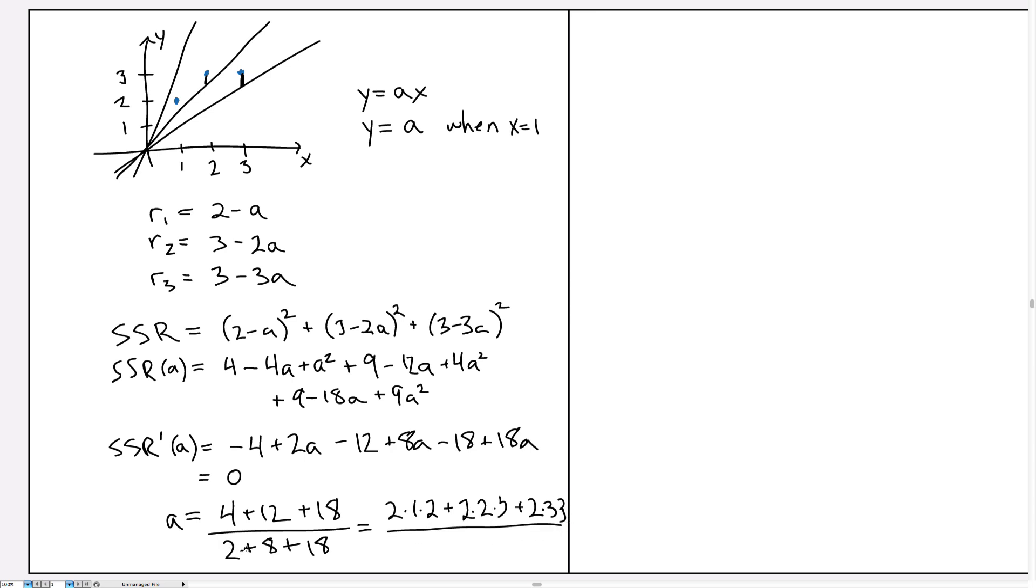What about in the denominator? This 2 came from the 2 in front of the A, which was from 1 squared, but then we brought down the 2. So that's just 2 times 1 squared. The next one, the 8, came from 4A squared, which was 2 squared, and then multiplied by 2 because of the derivative. And then finally the 18 came from 9 times 2, which was 3 squared, so 2 times 3 squared.